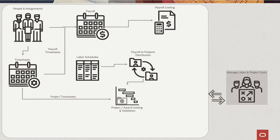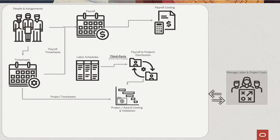This slide sets the context for the overall feature and the many functional enhancements that are included. As you can see in the upper left, people and assignments are where it all starts. People get paid on payroll either based on a full-time salary or payroll timesheets that are sent to payroll to pay the individuals. Those timesheets can also be sent to projects, or they can be sent to both payroll and projects. What we currently have that this feature is enhancing is a third-party integration using the Oracle Fusion projects transaction source and running the import payroll cost to distribute payroll cost based on labor schedules.